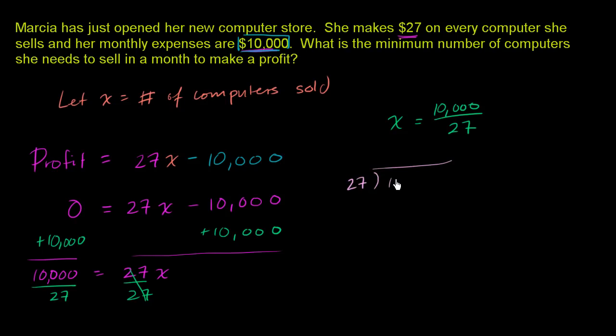So 27 goes into 10,000. 27 doesn't go into 1, doesn't go into 10. And it goes into 100 three times. 3 times 27 is 81. 100 minus 81 is 19. Then we can bring down a 0. 27 goes into 190. It looks like it'll go in about 6 times. Let's see if that's right. 6 times 7 is 42, 6 times 2 is 12, plus 4 is 16. And let's see, 90 minus 62 is actually 28.